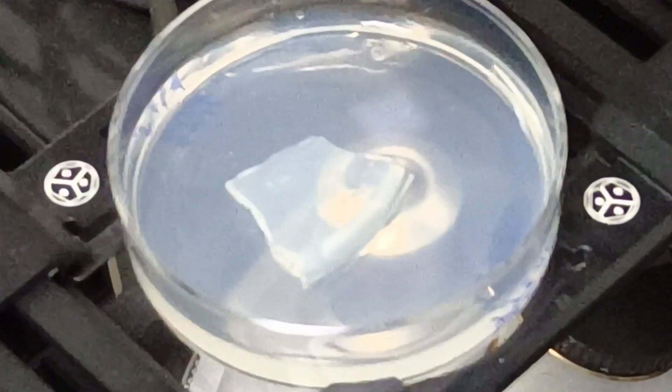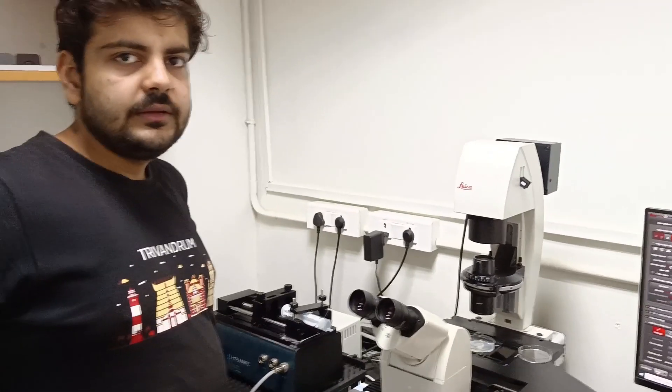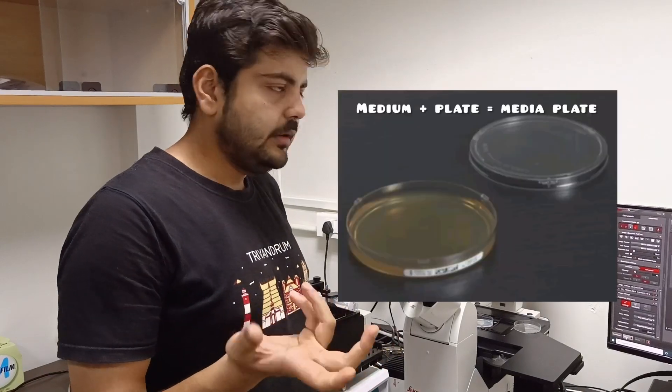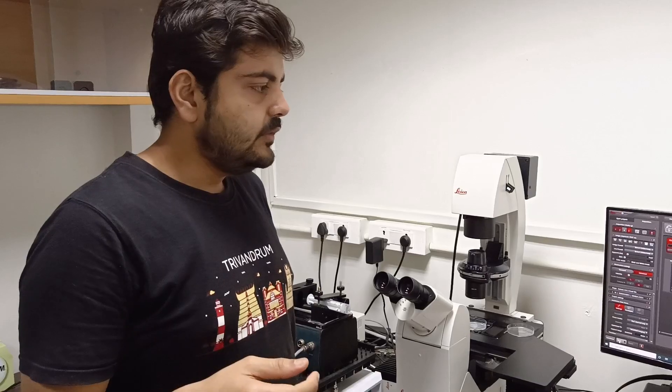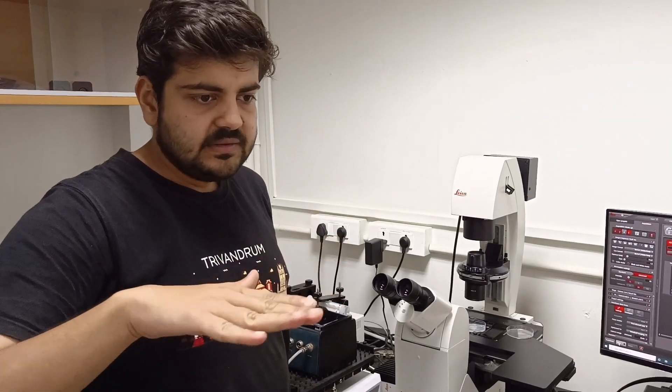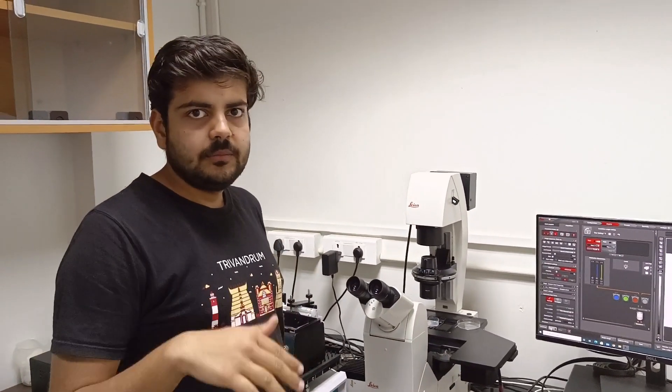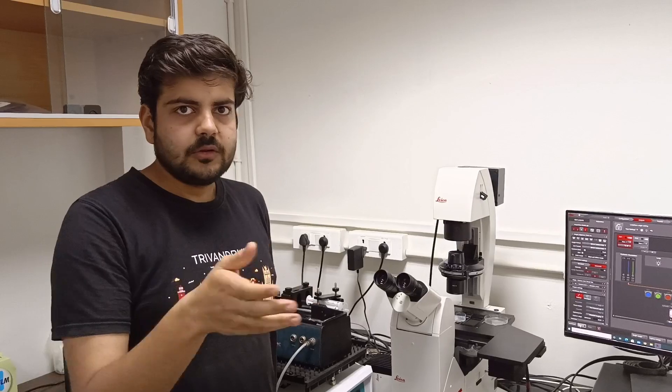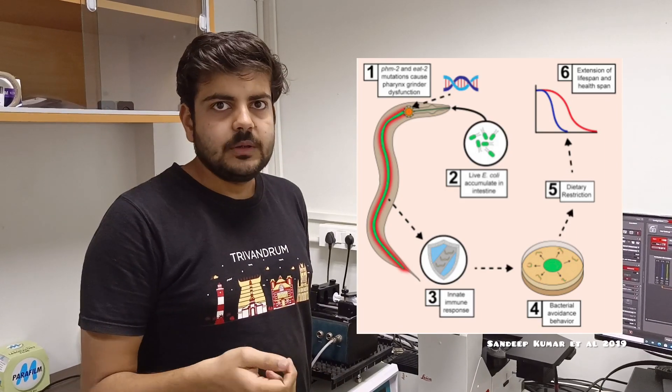These worms actually feed on bacteria as a food source. What we do is seed a layer of bacteria on top of it. For example, this plate which you are seeing is a media plate which has a layer of bacteria on top of it. And then what we do is put some worms on it. So what worms do is they eat the bacteria, and then they reproduce. And then you can do experiments on it depending on what you want.